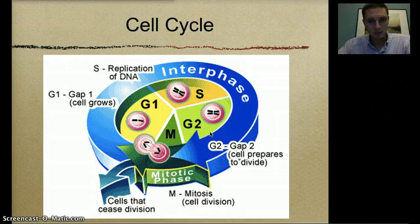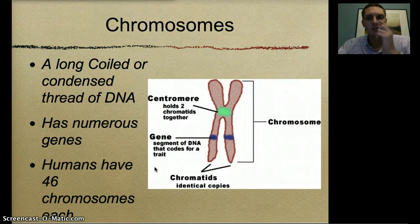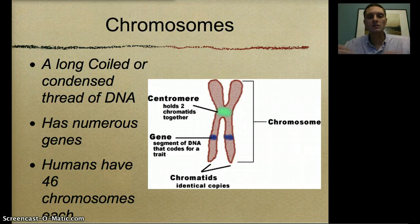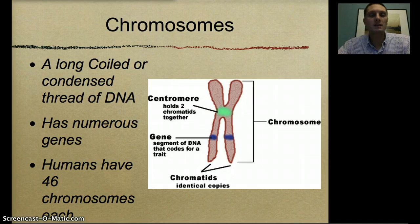Before we look more specifically at mitosis, we need to talk about chromosomes. Within the nucleus of a cell is DNA, and in order for a cell to copy or divide itself, that DNA also has to be replicated. In order for the DNA to be replicated, it needs to be condensed. DNA is usually long, stringy, wispy material that is very spread out. In order for the cell to manage it, it shrinks the DNA with some proteins down into something called a chromosome.